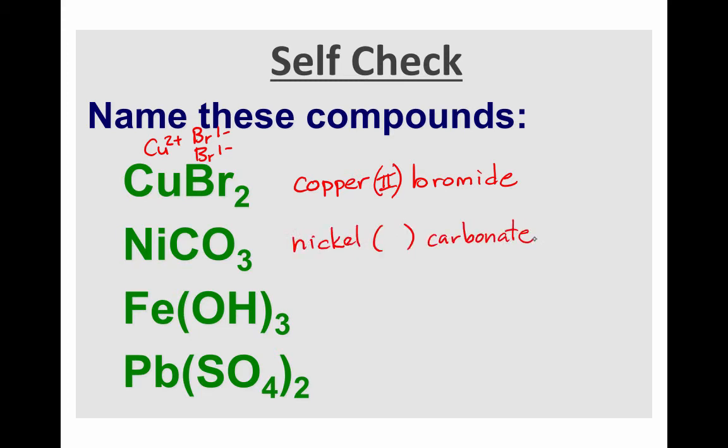It is nickel carbonate, but we want to specify which nickel ion this is. This one is nickel two carbonate. How did I know this? Well, recall from your memorizing of these ions that carbonate is a two minus ion.